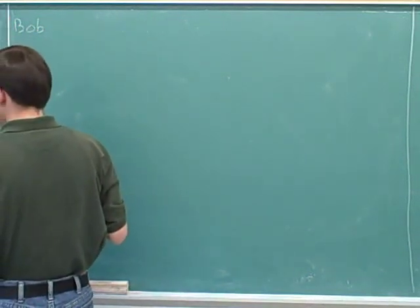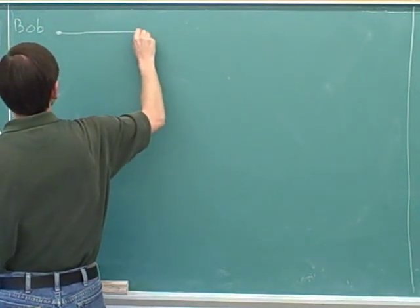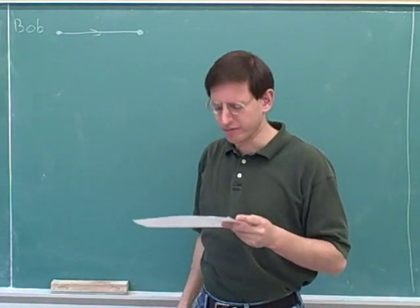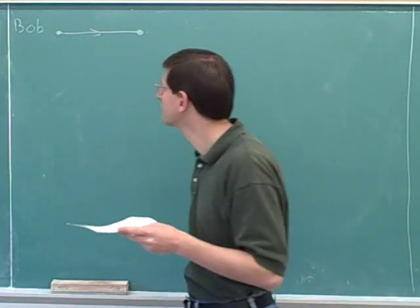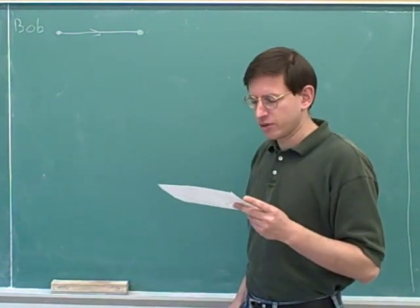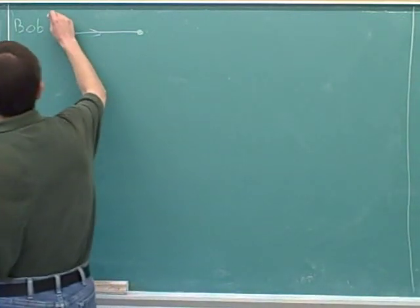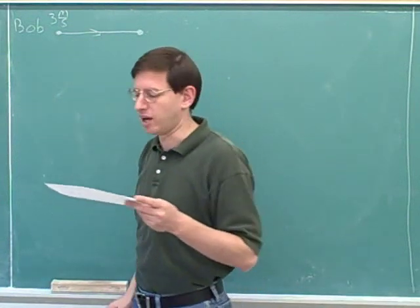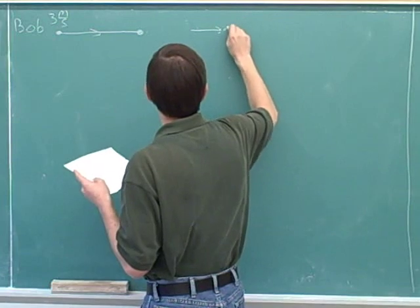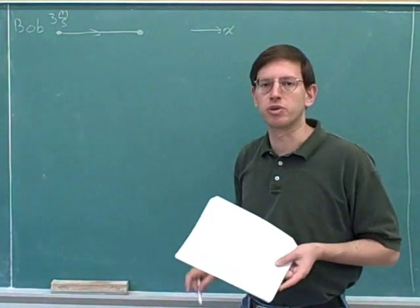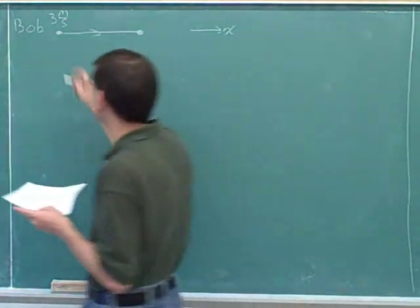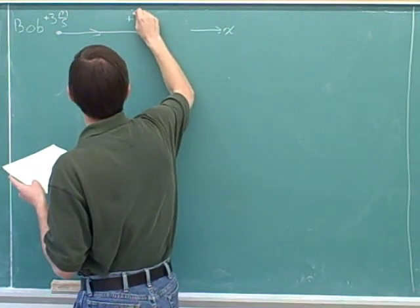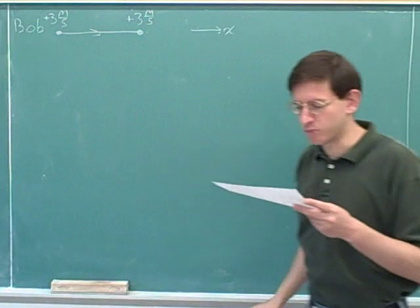Bob's path would look like this. They didn't tell us which way Bob is moving, so let's suppose that Bob is moving horizontally to the right. They told us that Bob is moving at a constant velocity of 3 meters per second. So we could say the initial velocity is 3 meters per second. Let's choose our direction of motion as our positive direction — since we're imagining moving to the right, let's choose to the right as positive. Then Bob's initial velocity is positive 3 meters per second, and his final velocity will also be positive 3 meters per second because Bob is moving at a constant velocity.